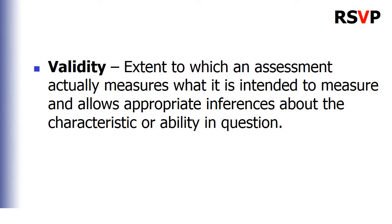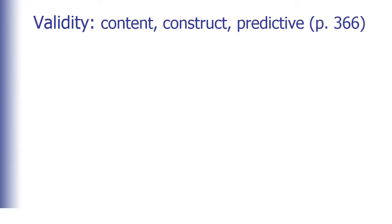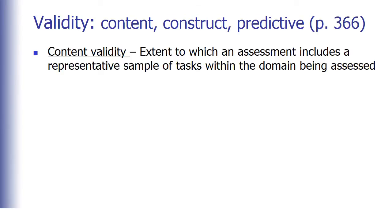Maybe it will help to represent this problem visually for you visual learners. I'm just kidding. Remember from prior chapters that everyone is a visual learner. Remember that the book discusses three types of validity on page 366. Content validity is the extent to which an assessment includes a representative sample of tasks within the domain being assessed.